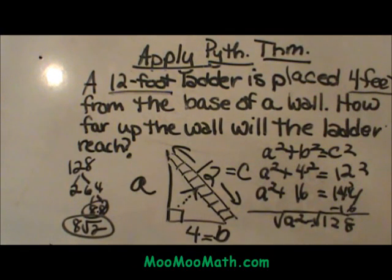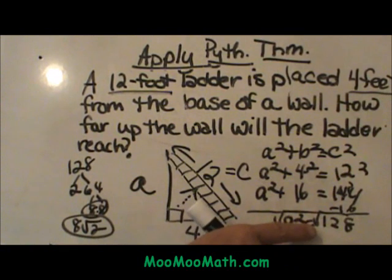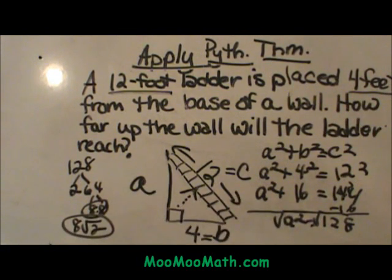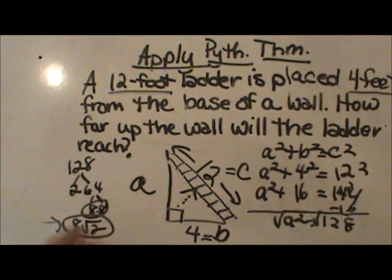You could also get the decimal version by taking the square root of 128 on your calculator. But the exact answer, or the radical form, is 8 square root 2. I hope all these tips were helpful.